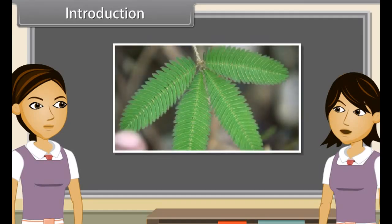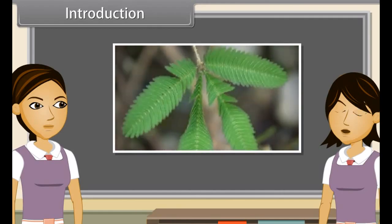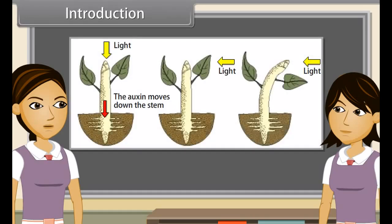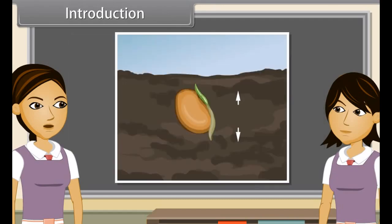We can say that plants can sense the presence of stimuli and respond to them. The hormones in plants coordinate their behavior by affecting the growth of a plant.